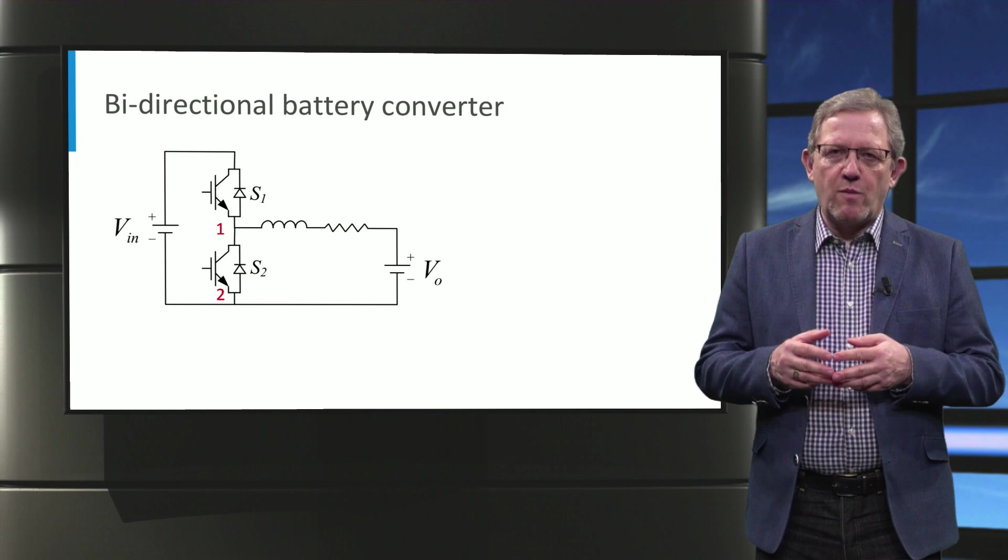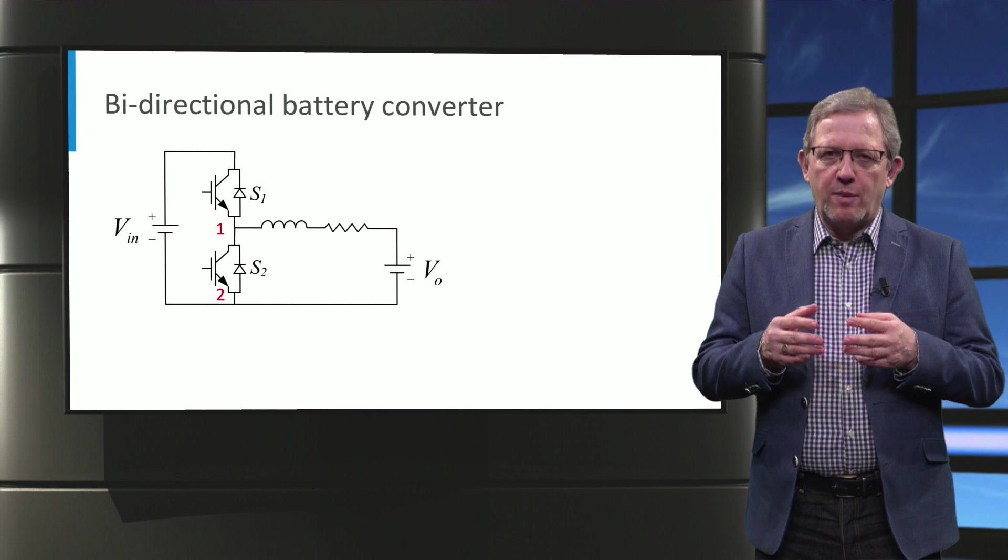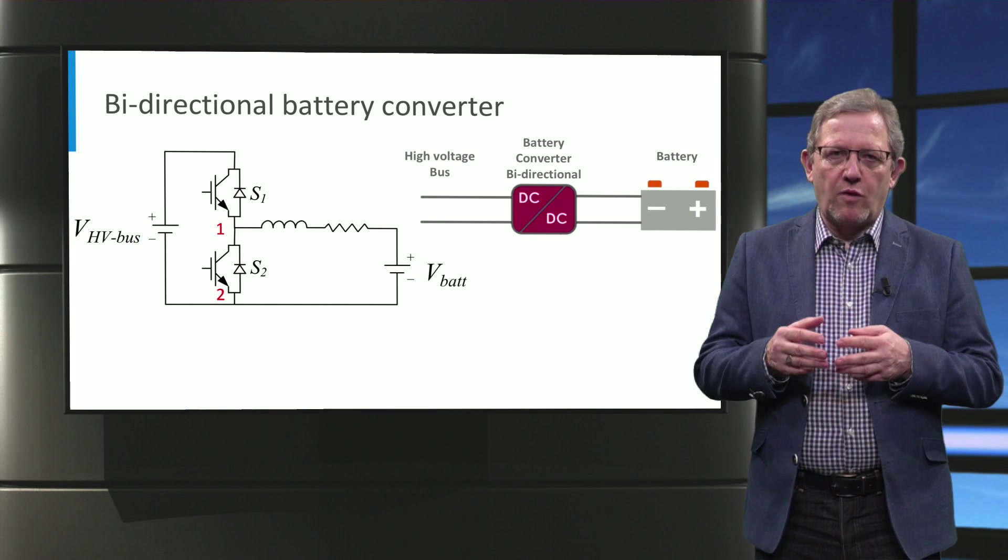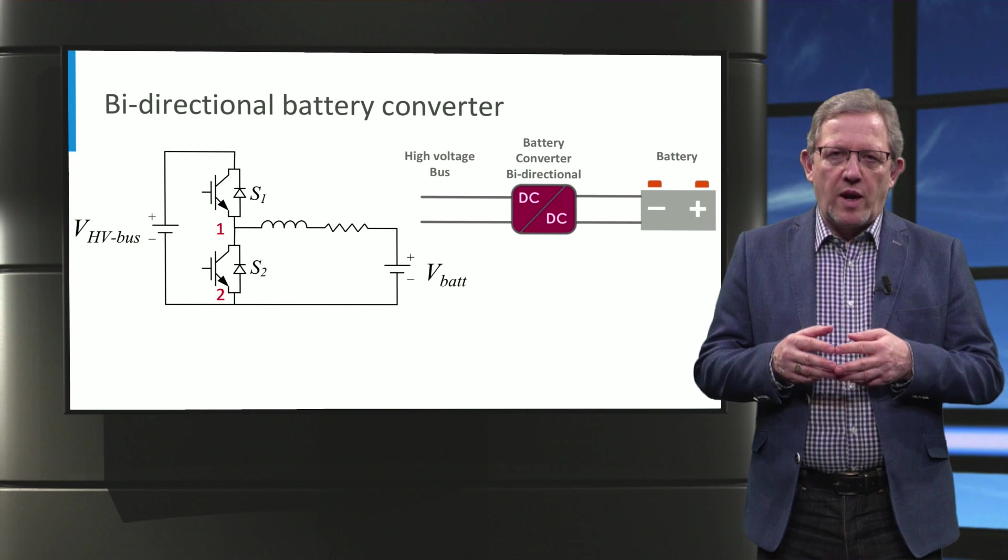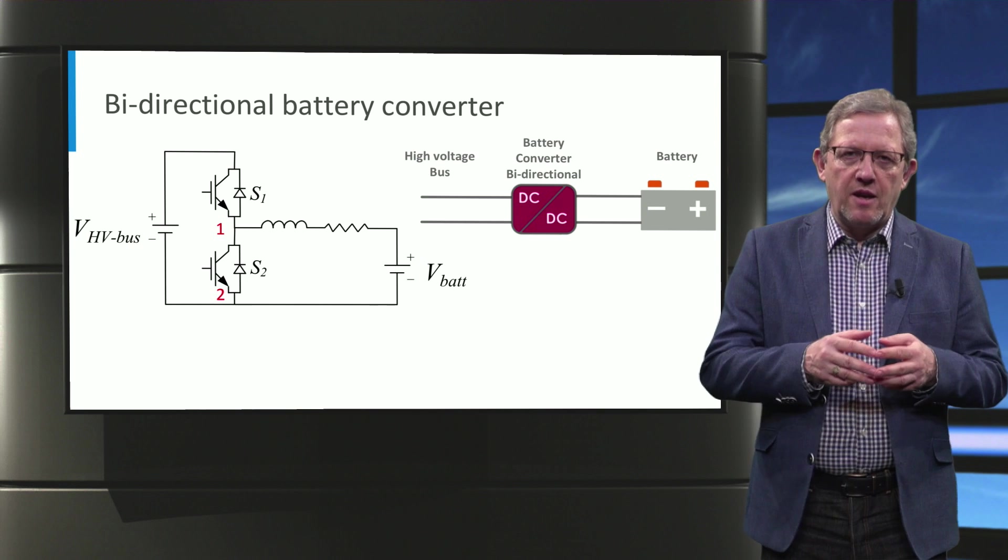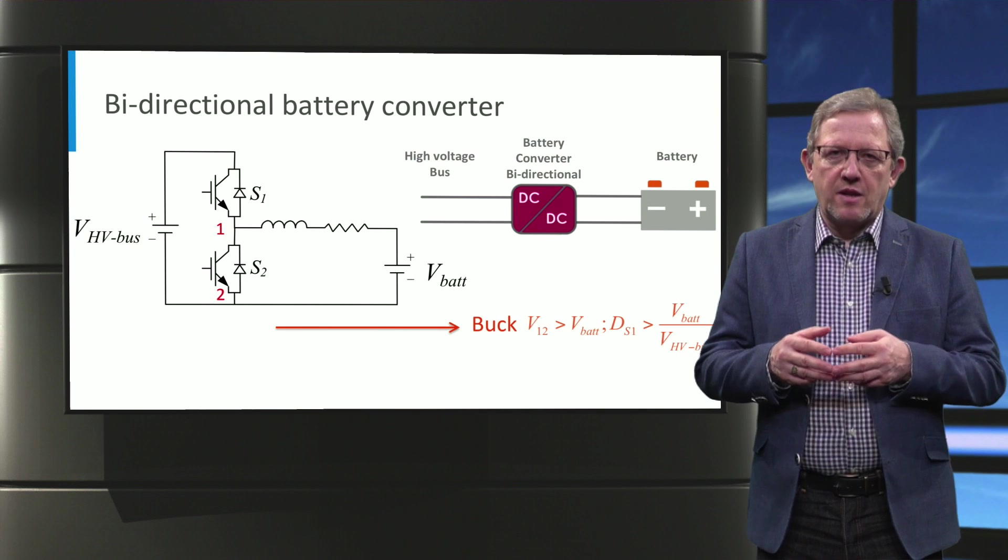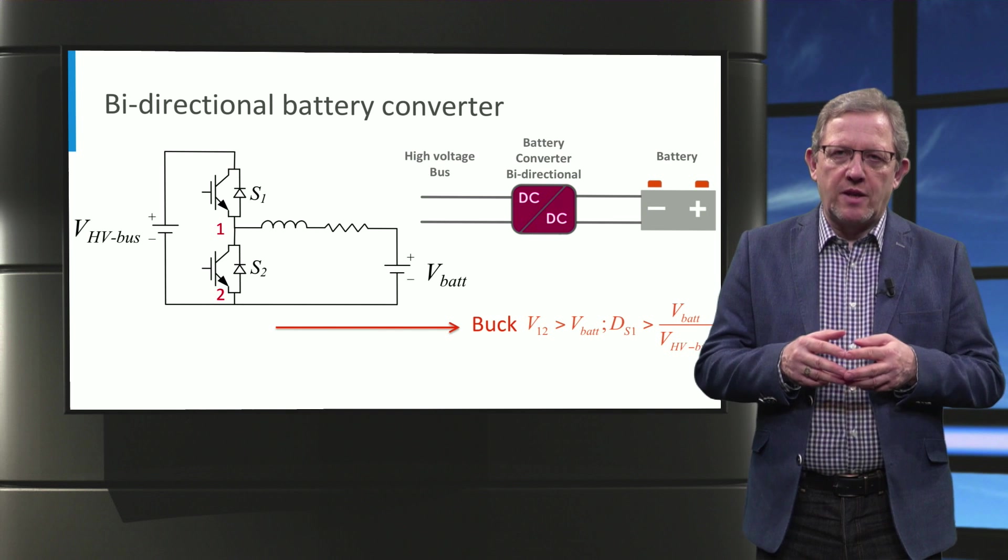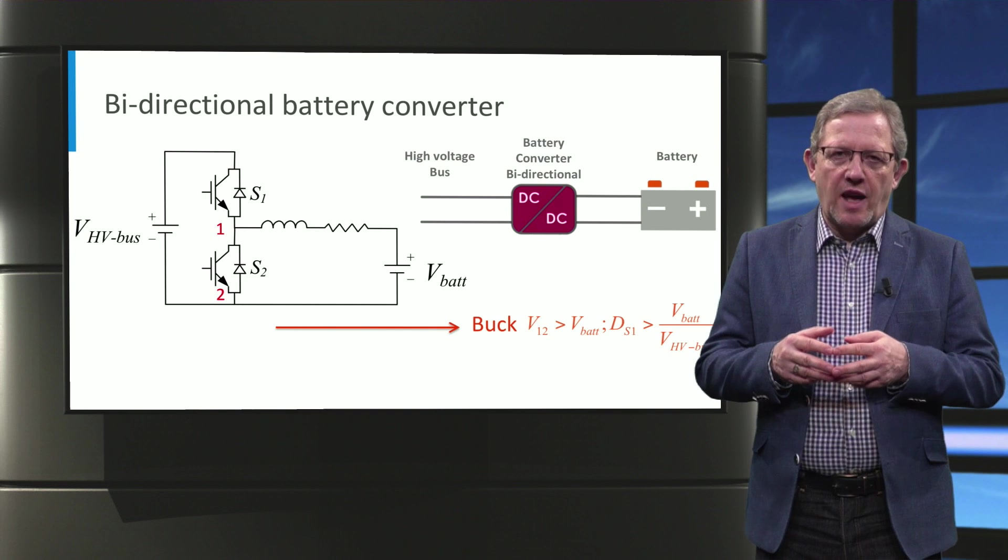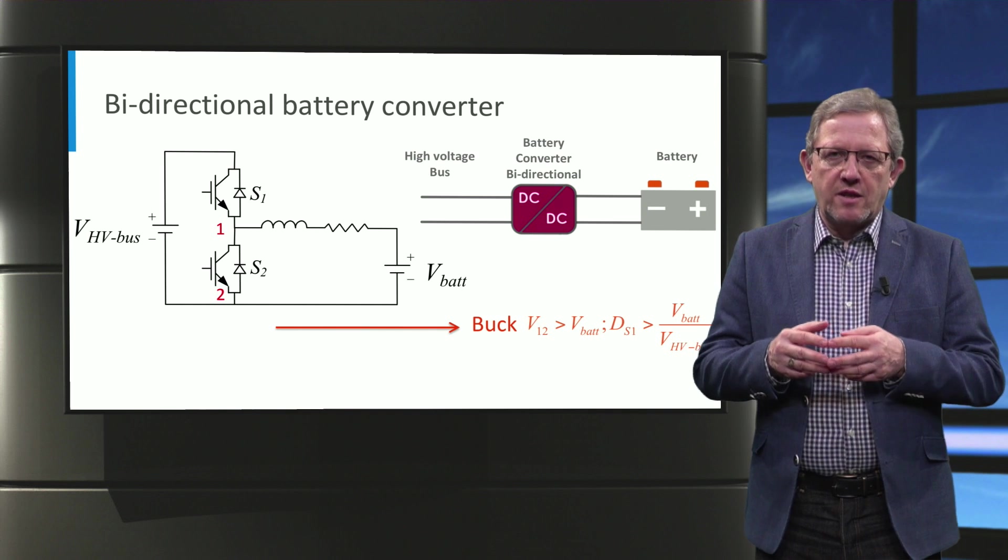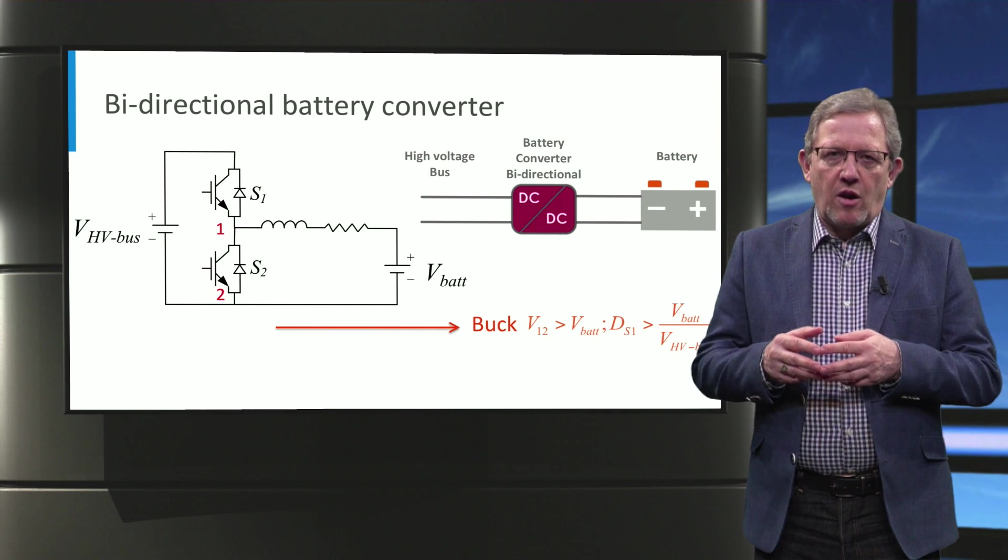Now we map the buck and boost converter back to the bidirectional battery converter of the electrical vehicle. When the regeneration power flows from the motor to the battery through the high voltage bus, the converter works as buck mode. It happens when D_S1 creates average voltage on terminals 1 and 2 larger than battery voltage.